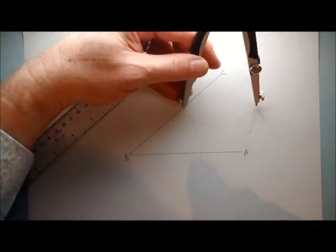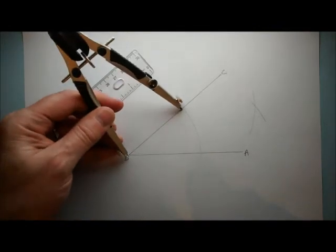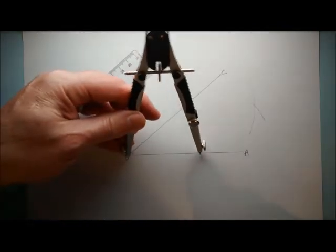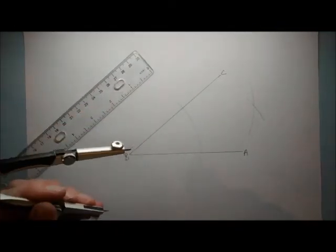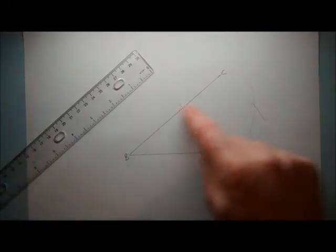Now all these distances are the same, so we've actually got a rhombus or parallelogram. Rather than draw the full parallelogram,